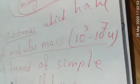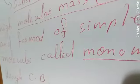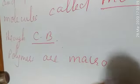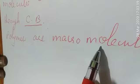Is it clear what polymers are? They are substances which have high molecular mass of about 10³ to 10⁷ u and are formed by the combination of simple molecules called monomers through chemical bonds. In short, we can say that polymers are macromolecules — that is, they are complex molecules. But is there any difference between polymers and macromolecules, or are they the same?